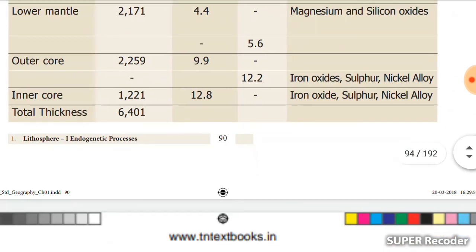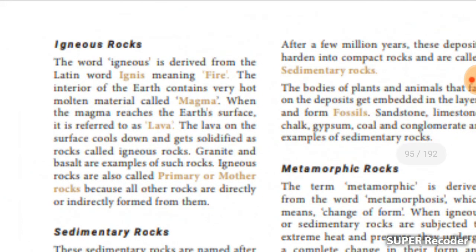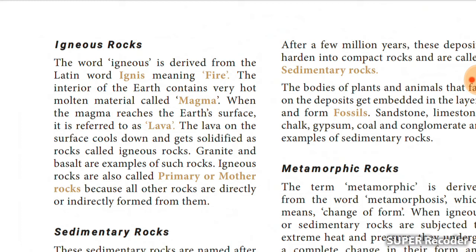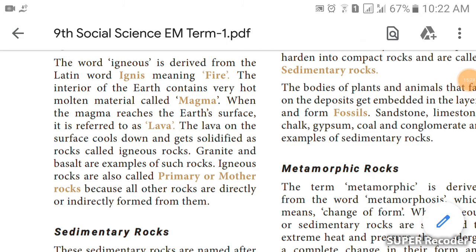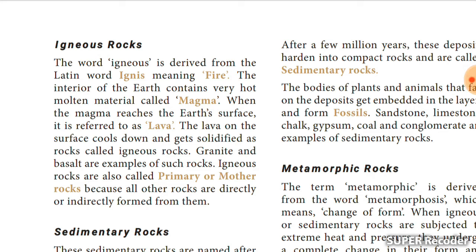Now we go to igneous rocks. There are three types of rocks. The word 'igneous' is derived from the Latin word 'ignis' meaning fire. The earth's interior contains very hot molten material called magma. When magma reaches the earth's surface it is referred to as lava — just like when a volcano erupts, the red fiery liquid flows out.